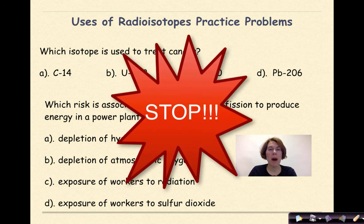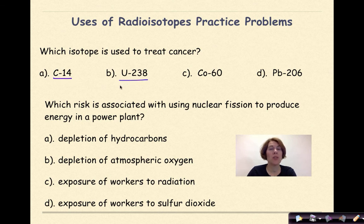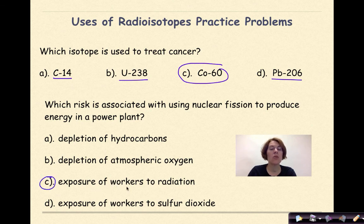More practice problems. Pause the video, do the questions, and check your work. Which isotope is used to treat cancer? Carbon-14 is associated with radioactive dating. Uranium-238 has a half-life that's way too long to use in medical treatment. Lead is much more stable. So the only answer is cobalt-60. Which risk is associated with using nuclear fission to produce energy in a power plant? The correct answer is exposure of workers to radiation.